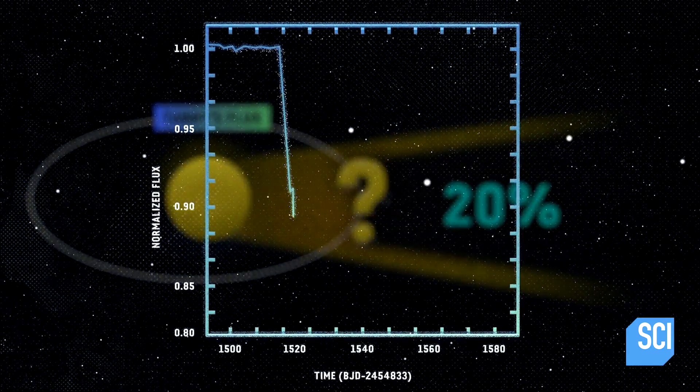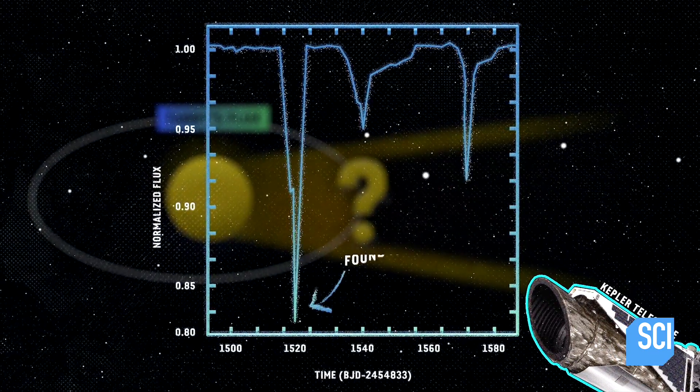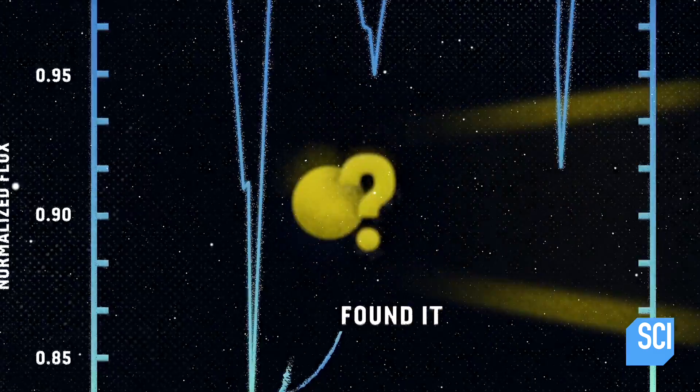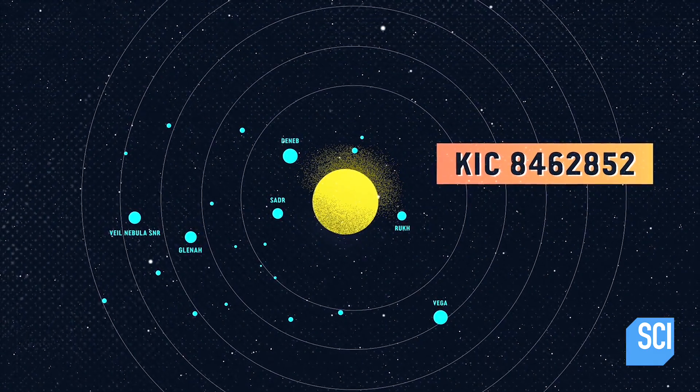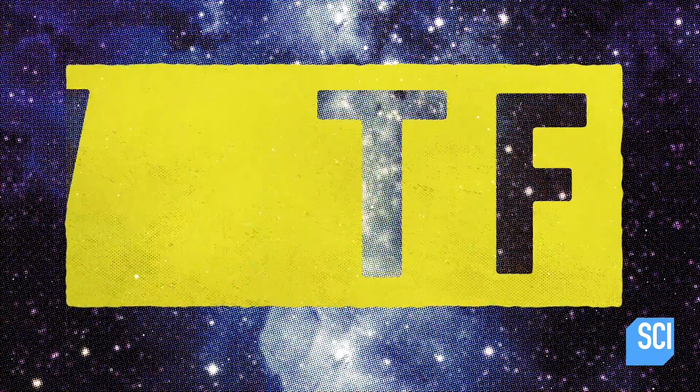So when NASA released the data collected by the Kepler telescope, citizen scientists noticed that Tabby's flux stood out from the other 150,000 stars being monitored, which is why everyone went all WT flux.